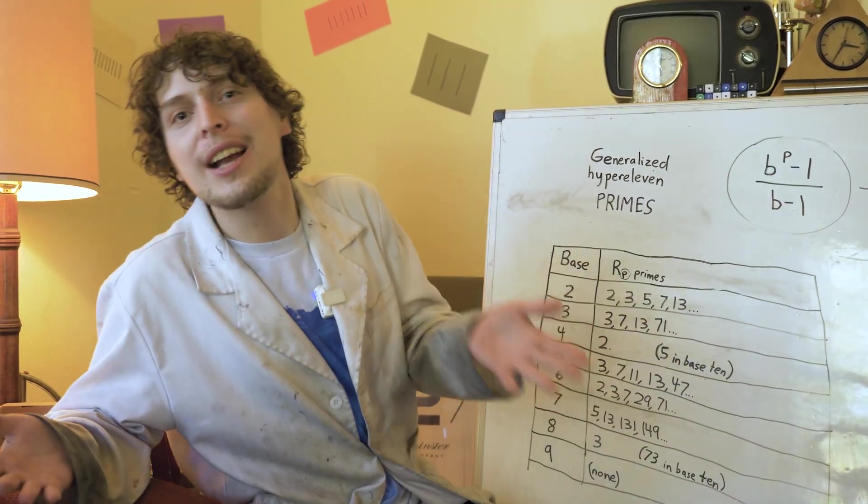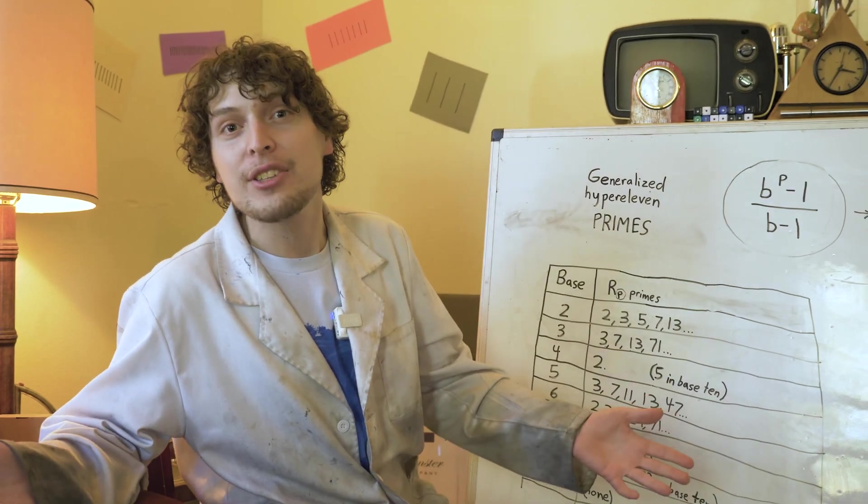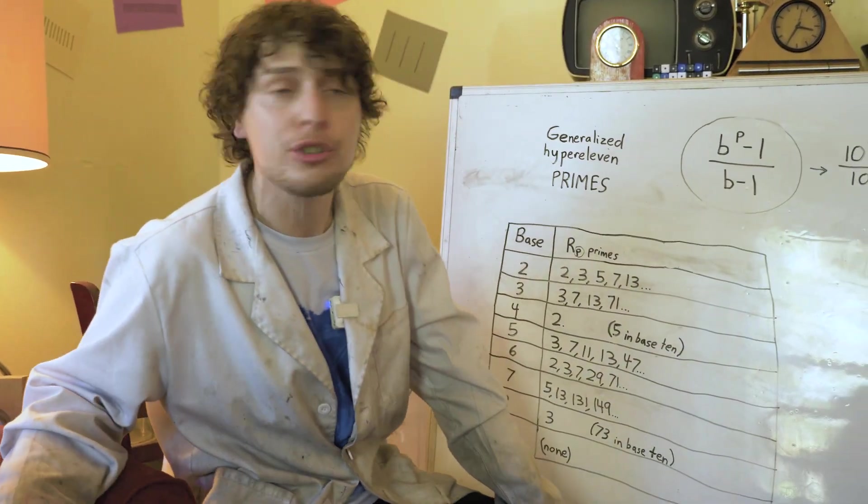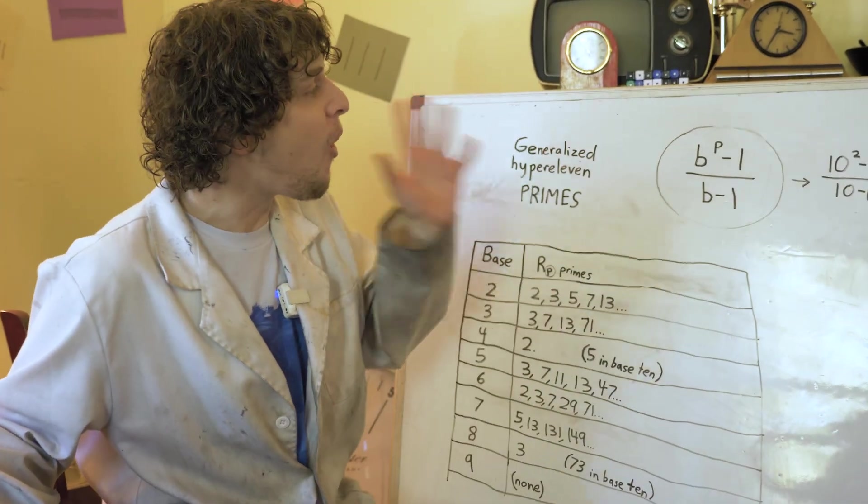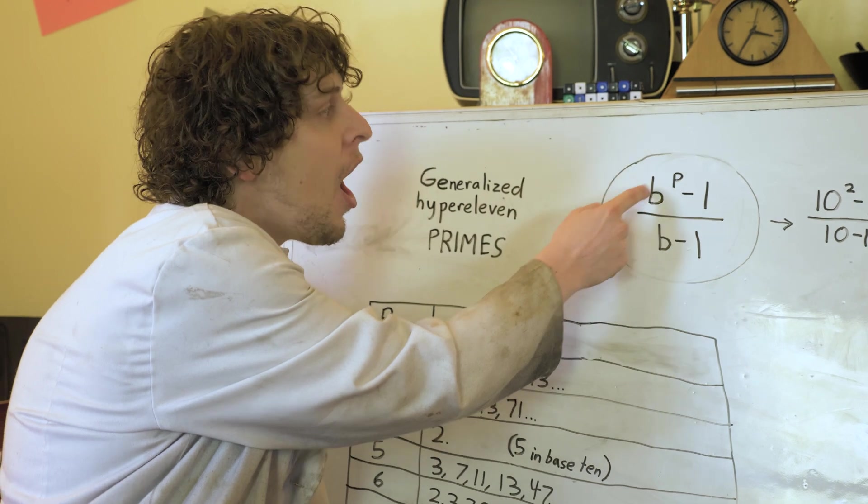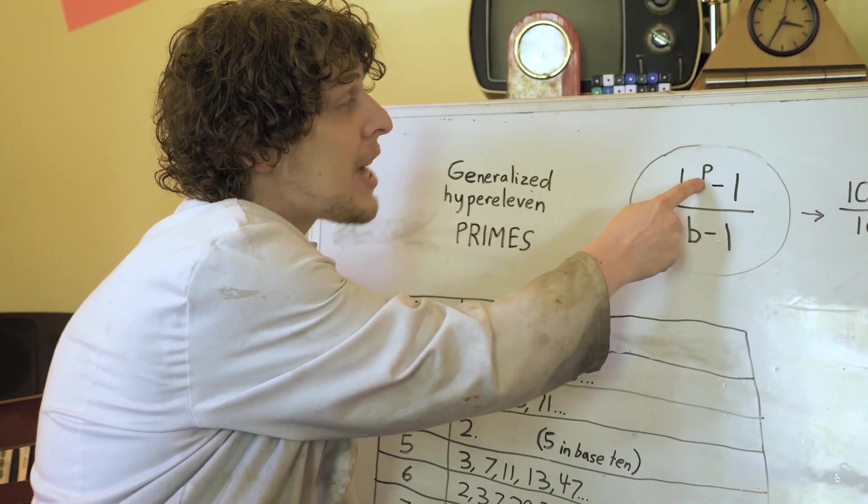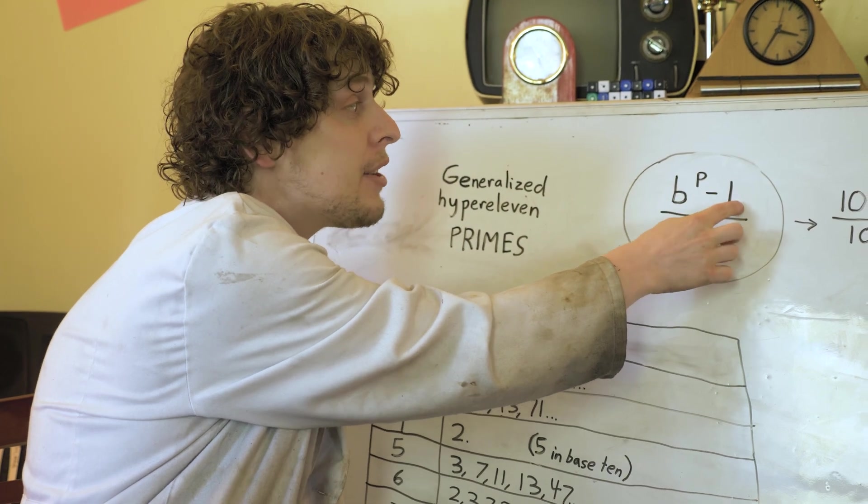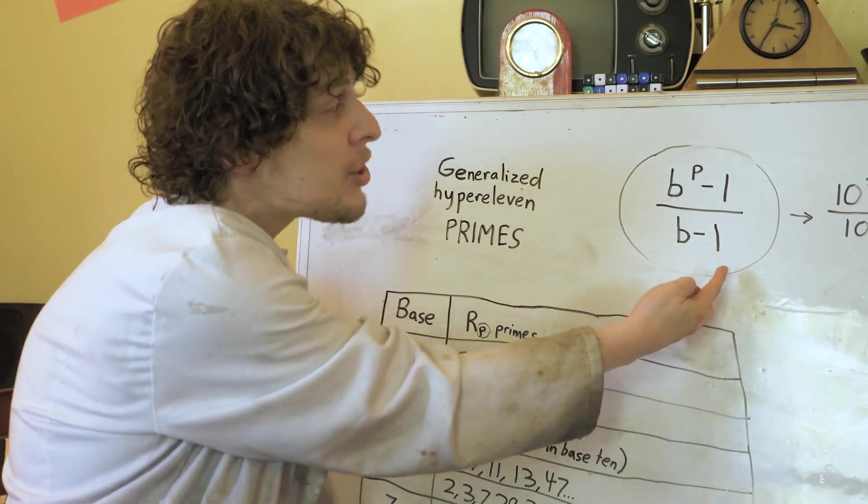Now, if it's hard to visualize strings of ones in different bases, we can also generate the generalized hyper 11 numbers with this formula. All of the hyper 11s are a base number up to an exponent, which has to be a prime if we're hunting for prime possibilities, minus one over the base minus one.